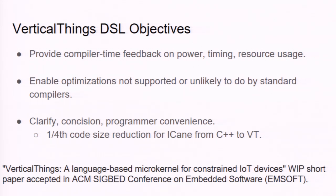There are three overarching objectives. First, to provide compile-time feedback on power, timing, and resource usage through static analysis. Second, to enable optimizations not supported or unlikely to be done by standard compilers. Third — important for a programmer — clarity, concision, and programmer convenience. As of now, we have ported the entire interactive cane application originally written in C++ into a fully working version in our DSL, which we will demo at the end. We have achieved a one-fourth code size reduction, which is important for programming and debugging. A work-in-progress short paper on the language has been accepted at ACM SIGBED.